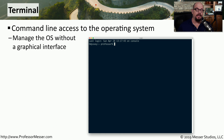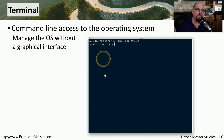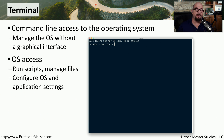Just as we have a command line in Windows, we also have a command line in Mac OS. We can access this command line from the Terminal utility. This provides a single view of the command line so that we can make changes to the operating system without going through the graphical user interface. If you're a system administrator, you'll use this command line to modify applications, run scripts, and manage the files on your system.